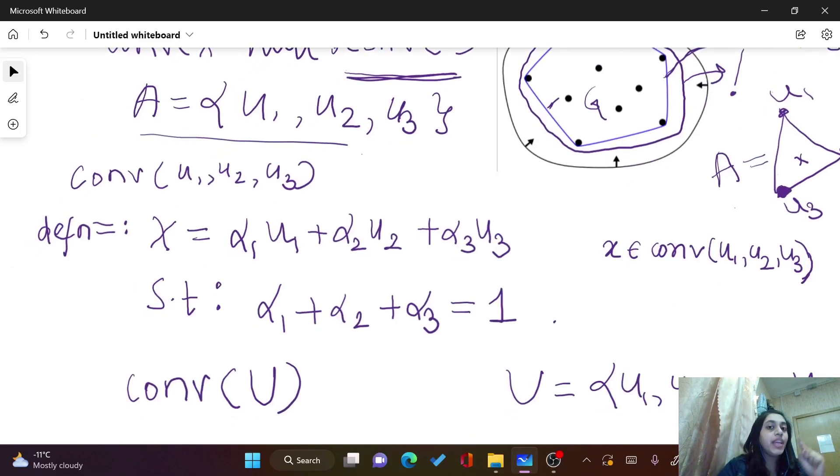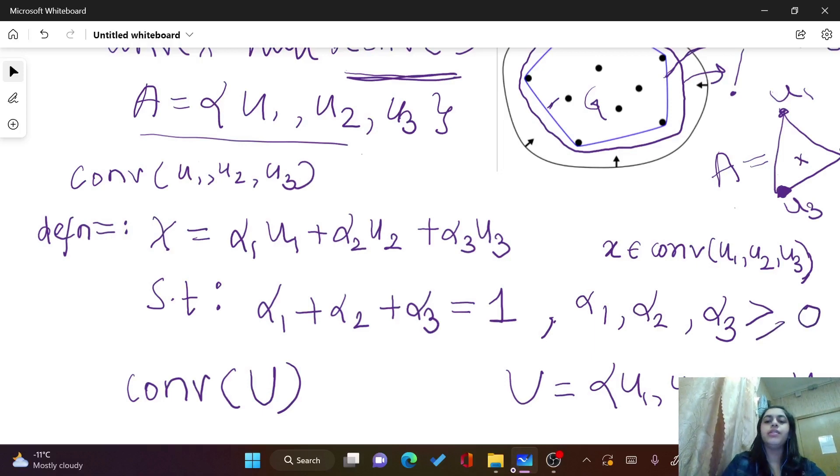So this x can be represented, can be expressed in terms of scalar multipliers and list points, which is also called as convex combination. So x can be expressed as convex combination of alpha1 u1 plus alpha2 u2 plus alpha3 u3, such that alpha1 plus alpha2 plus alpha3 is equal to 1. And alpha1, alpha2, alpha3 are all greater than or equal to 0.